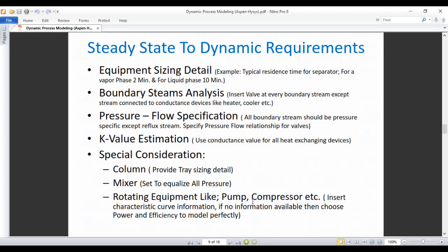Special consideration. If you have a column in a dynamic model, you will provide the tray sizing detail. If you are using mixer, then set to equalize all pressure. If you are using some rotating equipment like pump or compressor, then you will provide the characteristic curve details. If no information available, then you have to provide the power and efficiency to model it perfectly.